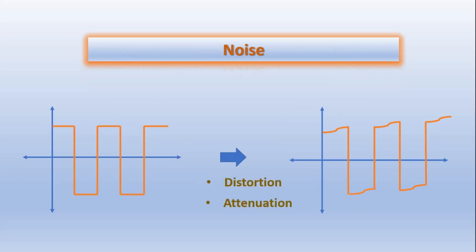By what amount the signal will be attenuated and distorted depends on the length of the channel. If the channel length will be more, then the amount of attenuation and distortion will be more. But the receiver should be capable of regenerating the original signal from this distorted signal, and it depends on the signal-to-noise ratio.